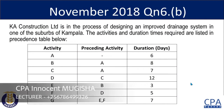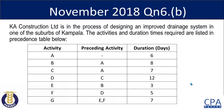Hello everyone and welcome to yet another very exciting discussion on network analysis. This is our second session, following a full discussion on the meaning of network analysis, concepts like project planning, activities, events, and the importance of network analysis and the rules of drawing networks. The activity we have picked is from November 2018, Question 6 Part B: KA Construction Limited, which is designing an improved drainage system in one of the suburbs of Kampala. Activities and duration times required are listed in the precedence table, with activities from A to G.